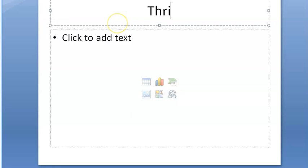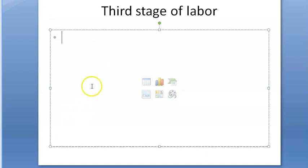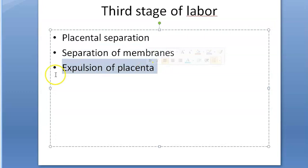In the third stage of labor, after placental separation you will have separation of the membranes, followed by expulsion of the placenta. After complete separation, the placenta is forced down into the lower uterine segment or the upper part of the vagina, and expulsion can also be assisted manually.